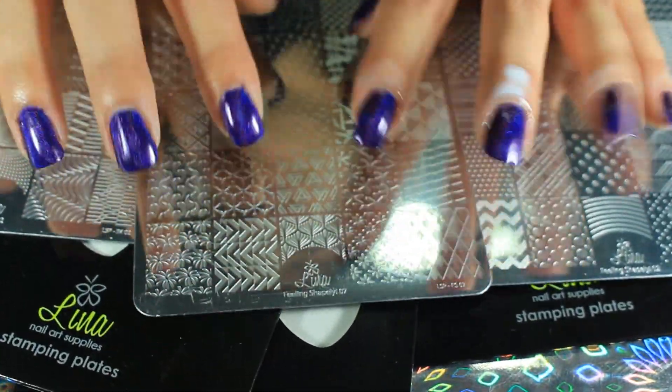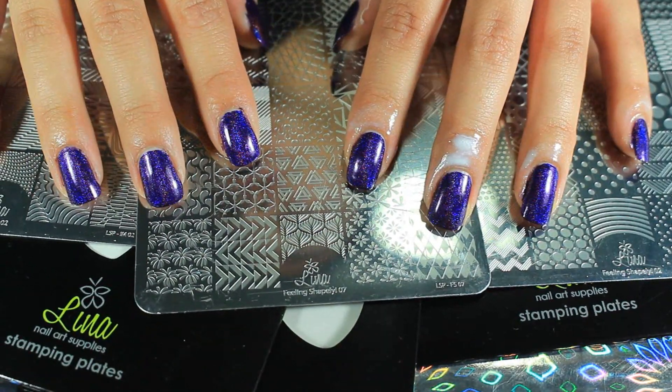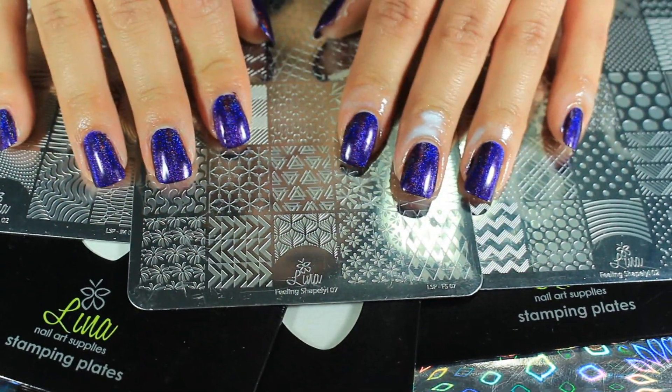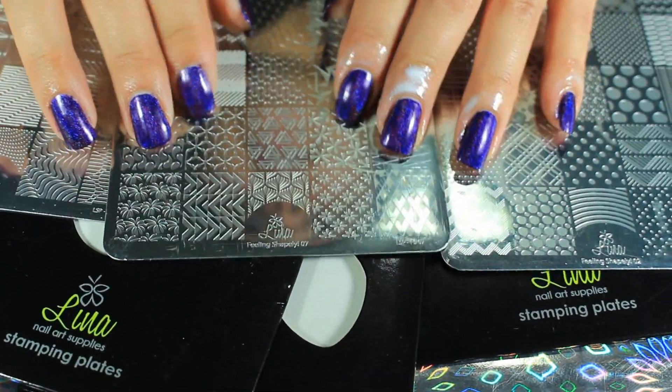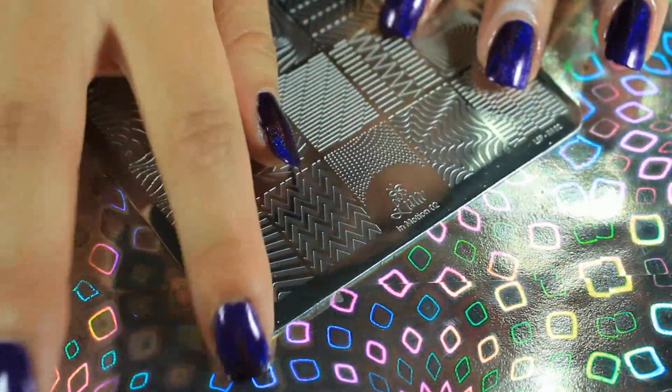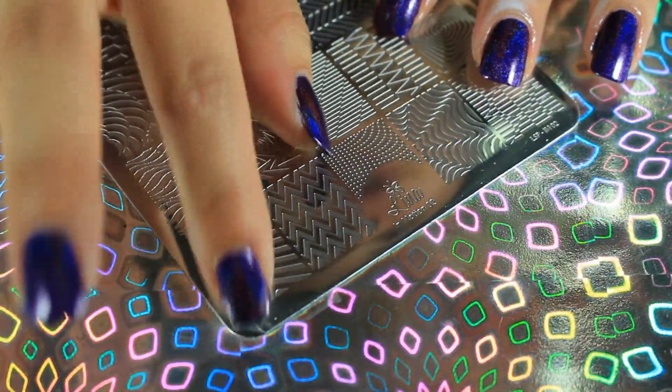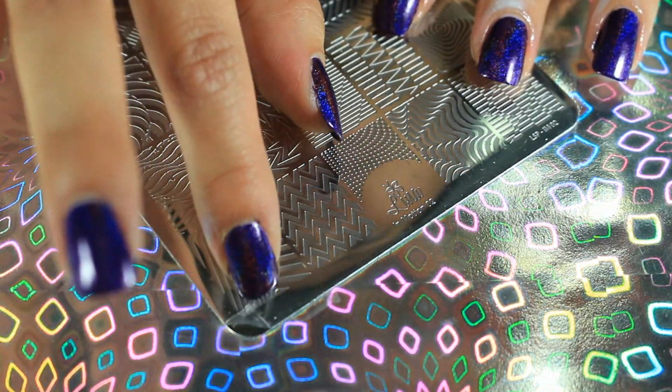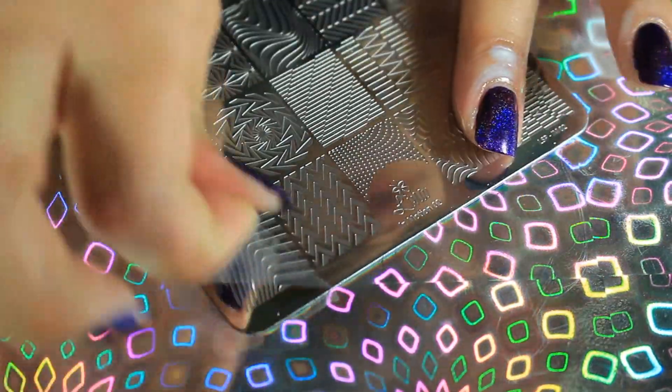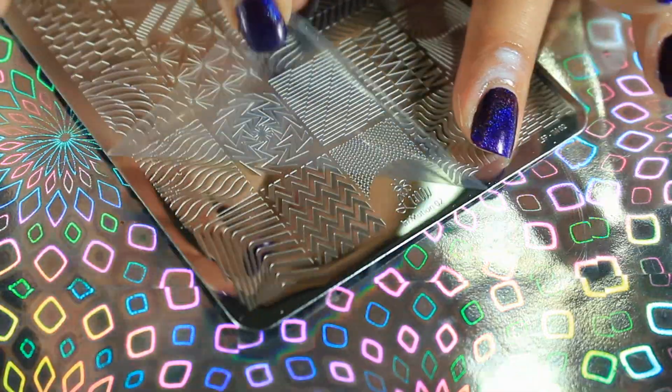So I have my nails prepped and I'm just going to show you them on my nails this time instead of paper. So let's go ahead and get started. The first plate I'm going to show you is In Motion 2 and these ones come with a clear film so don't forget to remove that or the stamping will not work.